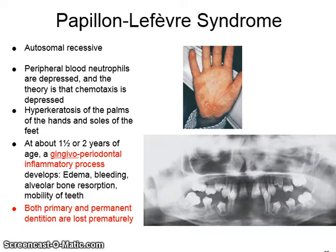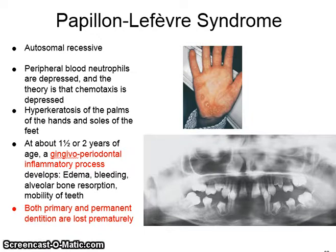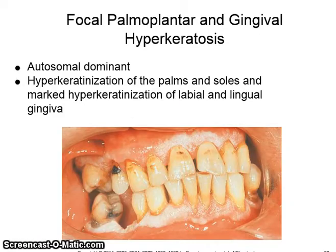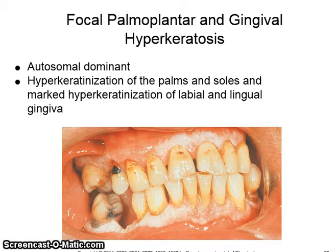Papillon-Lefebvre syndrome occurs at about one and a half to two years of age, and a gingivoperiodontal inflammatory process develops. Both primary and permanent dentition are lost prematurely. Focal palmoplantar and gingival hyperkeratosis demonstrates hyperkeratinization of the palms and soles of feet and marked hyperkeratinization of labial and lingual gingiva.